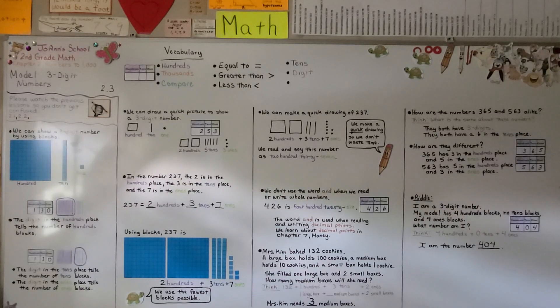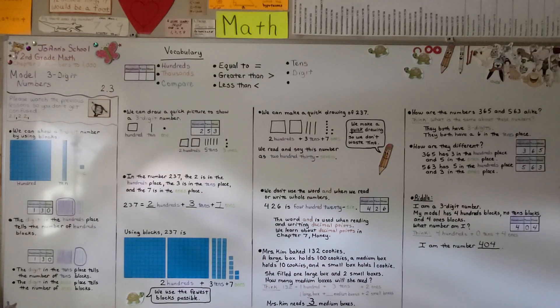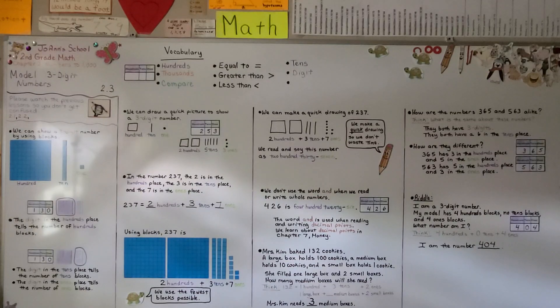Our next lesson is 2.4 — we're going to write and draw how many hundreds, tens, and ones we see. I hope I'll see you there and I hope you're doing very well. Bye!